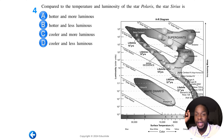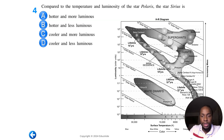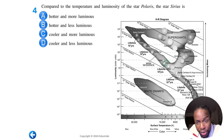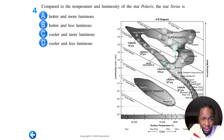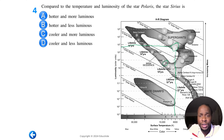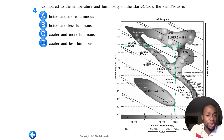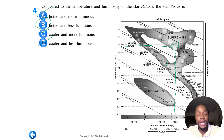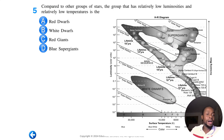Question four: Compare the temperature and luminosity of the star Polaris to the star Sirius. Polaris is right around here on the diagram. Polaris is bigger in terms of luminosity and cooler in terms of temperature compared to Sirius. That means Sirius is less luminous and hotter than Polaris. So the answer is B: hotter and less luminous.